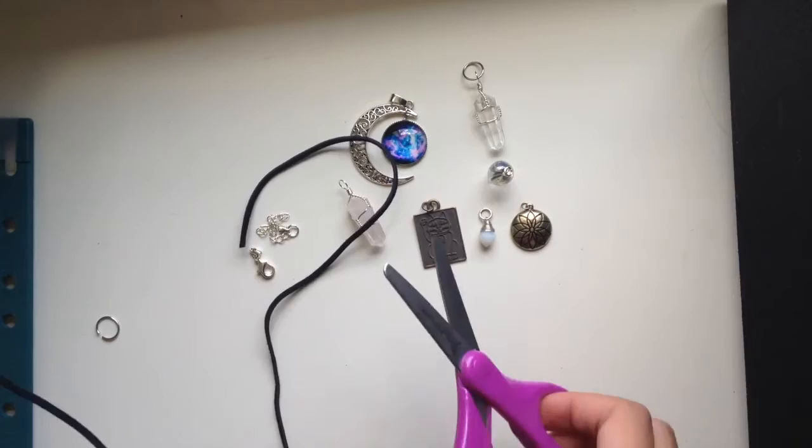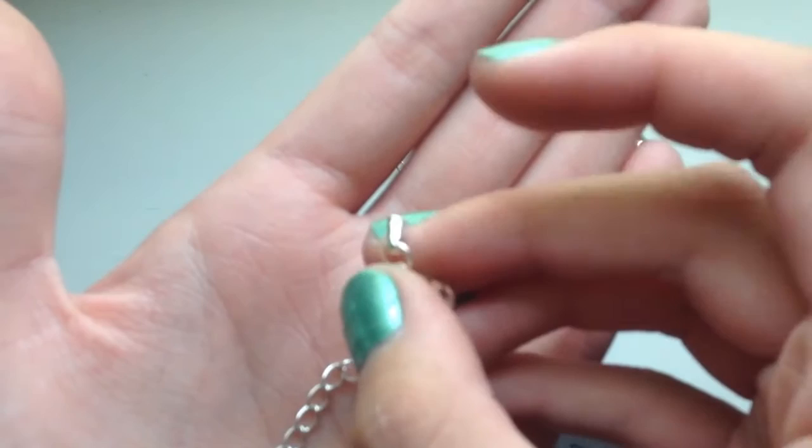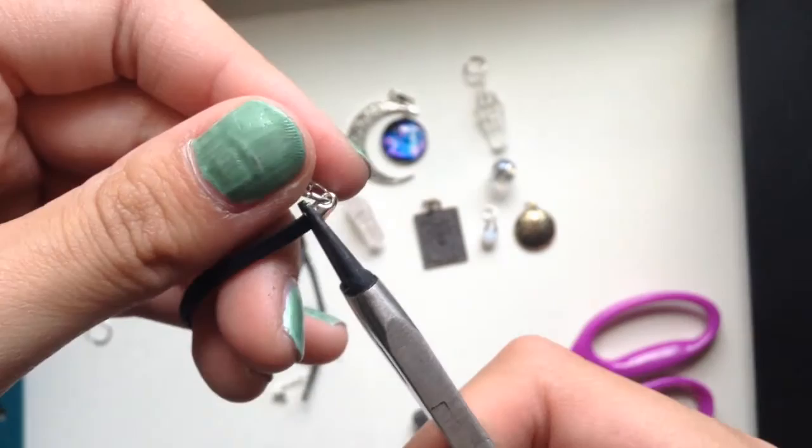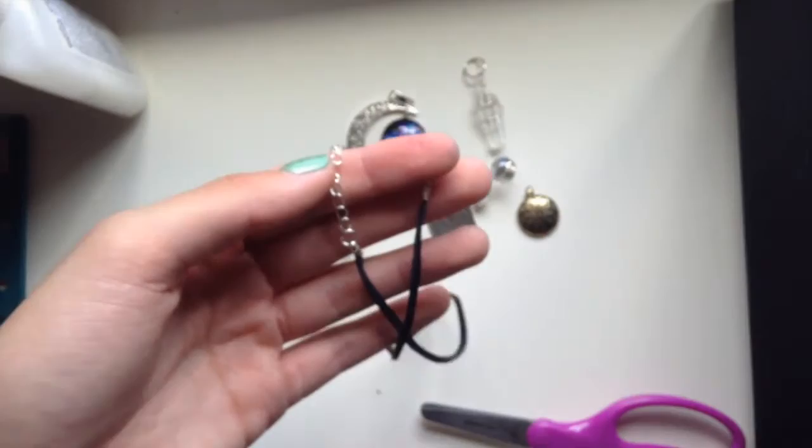Once you've measured the suede cord around your neck, you're going to cut it off and then take your lobster clipping. You see the cone-shaped end? You're taking the suede cord and you're going to put that through the cone-shaped end. Once you have that done, you're going to take your jewelry pliers and squeeze your jewelry pliers around the cone-shaped end so that it squeezes the suede cord. Once you've done the same exact thing with the other side, you're going to take your jewelry loop and pry it open.